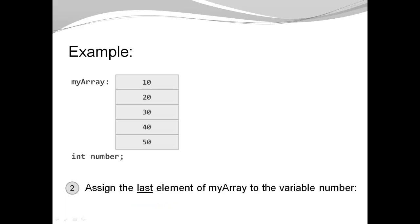Second challenge: assign the last element of myArray to the variable number. This is still a reading situation. I need to find the index of the last element, which is always the number of elements minus one. So I use myArray.length - 1 as the index, and assign the value — which in our case is 50 — to my variable number.